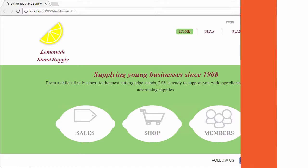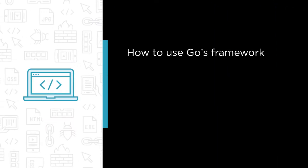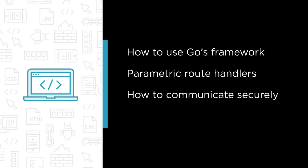In this course we're going to learn how to use Go to create a full-featured web application following the model-view-controller design pattern. Some of the major topics that we will cover include how to use Go's templating framework, how to create parametric route handlers for our controllers, how to communicate securely and efficiently with HTTPS and HTTP2, and finally how to test and profile web applications.